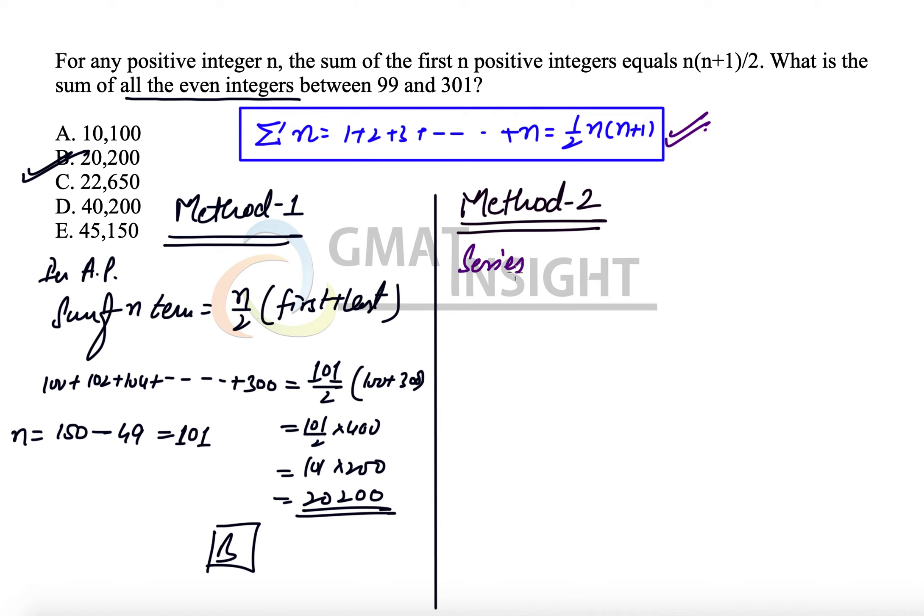What we need to do first is write the series that we have to add. The given series is 100 + 102 + 104 and so on up to 300. Now if you take 2 common from this entire sequence, we are left with 50 + 51 + 52. Because 102/2 is 51, 104/2 is 52 and so on. This has to go up to 150.